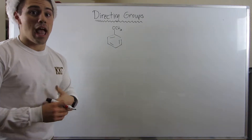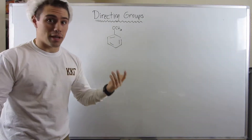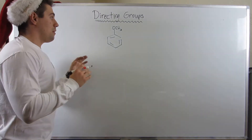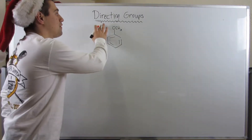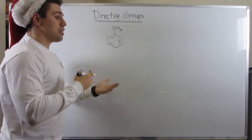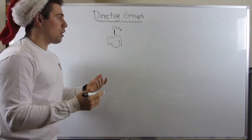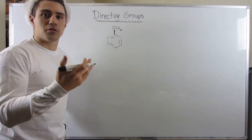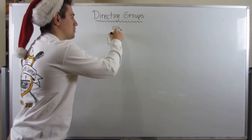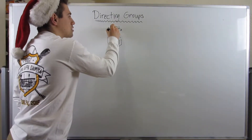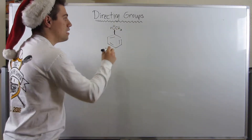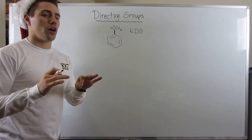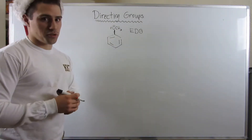Here I've drawn the structure of methoxybenzene, and we're going to draw some resonance. I'm going to categorize this methoxy group as an electron donating group — it's an electronegative atom directly attached to the benzene ring with electrons to pump into our aromatic system. Let's draw the resonance, and it's going to show us what type of directing group it is.